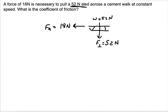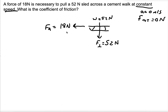Now the other thing that's important here is it says that it's moving at a constant speed. If it's moving at a constant speed, that means the acceleration is zero. And if the acceleration is zero, that means the net force is zero. And in order for the net force to be zero, we already have an applied force of 18 Newtons — we're going to need an opposing force of 18 Newtons.